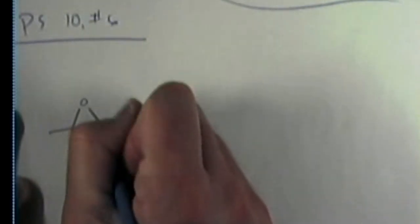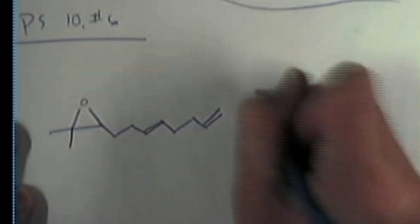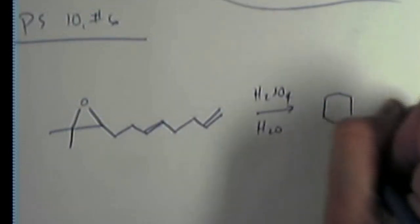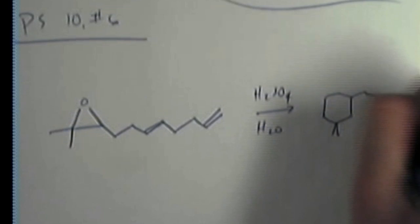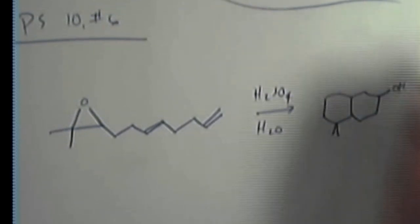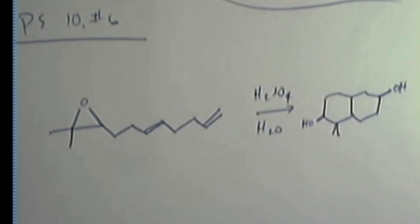I love this problem. I love problems like this. And the reason is because they illustrate some of the elegance of organic chemistry in terms of taking a starting material that might, on the surface, not look anything like a product and converting it into a really cool-looking product in one step.